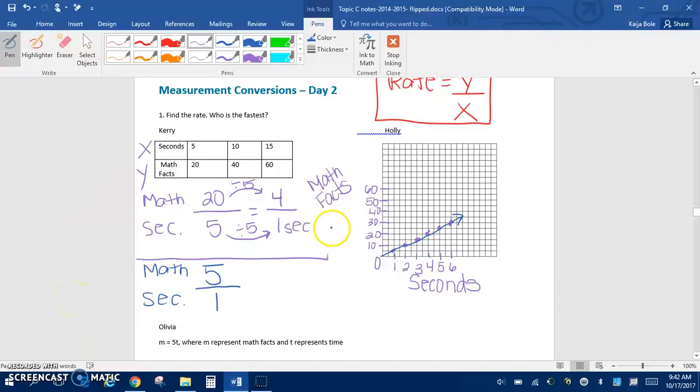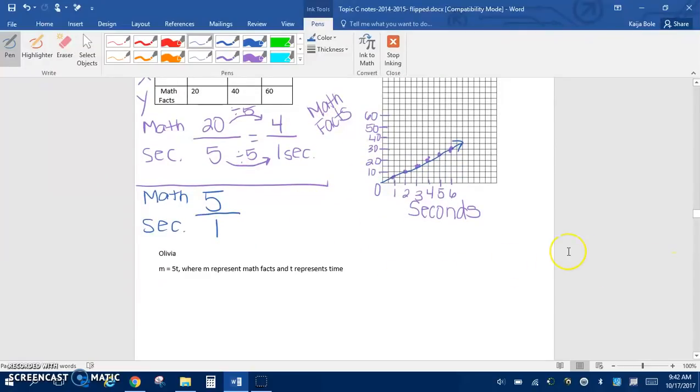And then our last person here, we have Olivia. So this is the new part of today. So we have m equals 5t where m represents the math facts and t represents time. So if we're looking at this, this 5t here, write yourself a little note. This is the unit rate. So this means that she can do 5 math facts in 1 second.